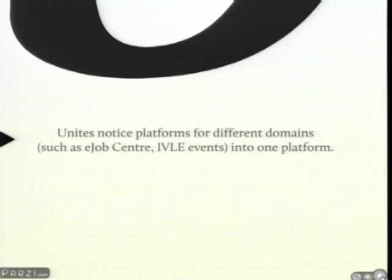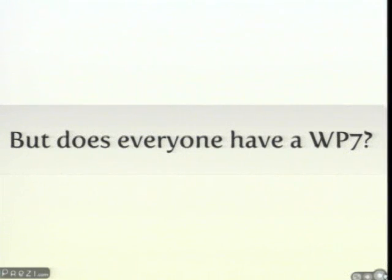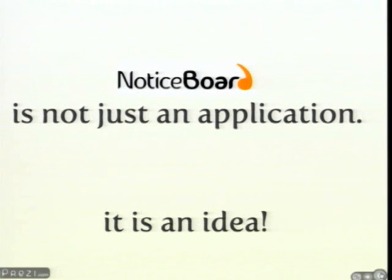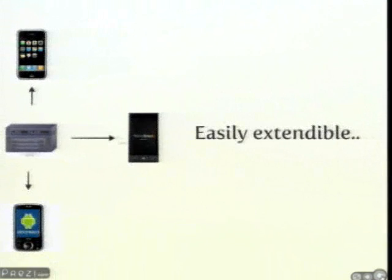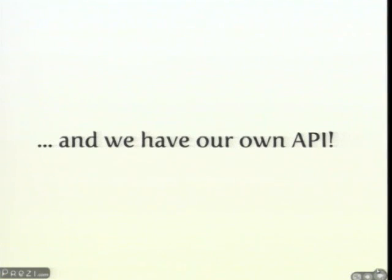Before I continue, I'm sure this question is on everybody's mind: does everybody have a Windows Phone 7, and can this app reach out to the whole NUS community? My team, AppCycles, believe that NoticeBoard is not just an application, but an idea. Therefore, we took great care in developing our application and chose the client-server architecture. Our Windows Phone 7 app is nothing but a client talking to the server, which means that even the iPhone or Android can talk to our server. To make things even simpler, we have our very own API, which allows events to be consumed from our server.